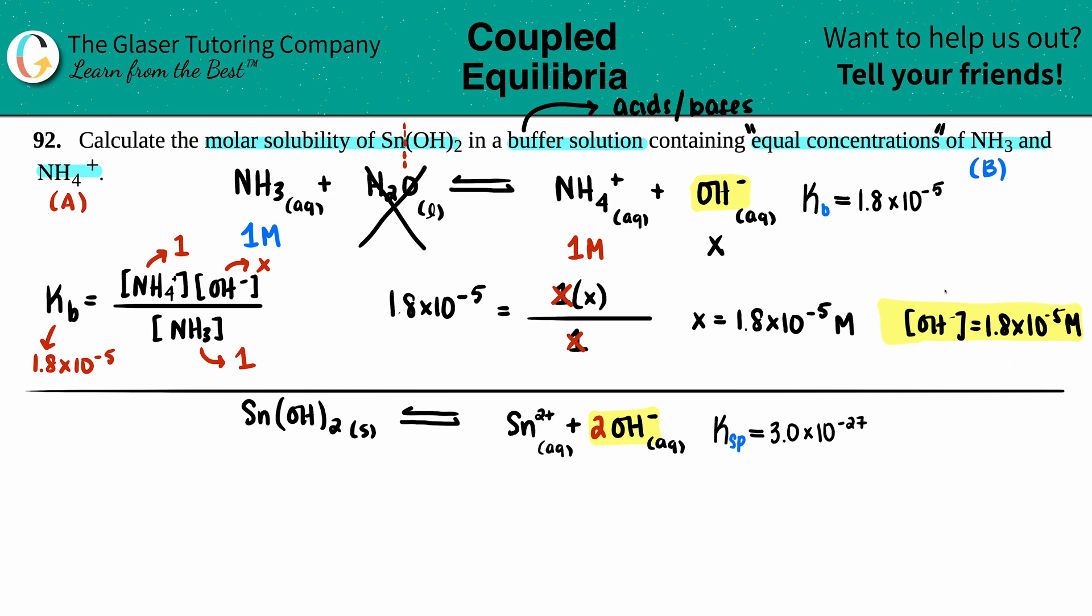Don't get tricked just because there's a 2 here. We are not multiplying this by 2. We don't miraculously have like 2 times the concentration. Whatever it was here, that's the number that goes here: 1.8 times 10 to the negative fifth.